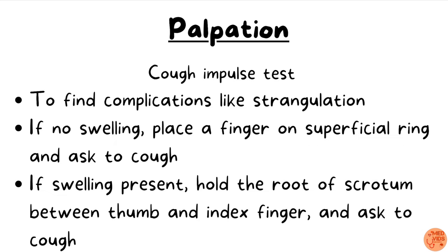Cough impulse test: this helps assess for complications like incarceration and strangulation. If no swelling is visible, place a finger on the superficial inguinal ring — above and medial to the pubic tubercle — and ask the patient to cough; you will feel an expansive cough impulse. If the swelling is clearly present, hold the root of the scrotum between thumb and index finger and ask the patient to cough; an expansive cough impulse will push the fingers apart, indicating the absence of complications such as irreducibility or incarceration.